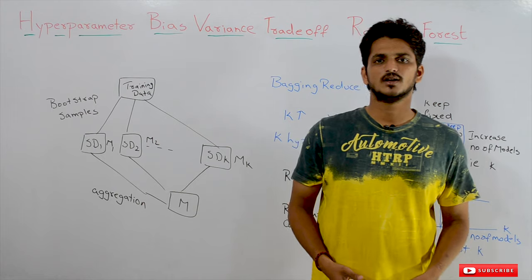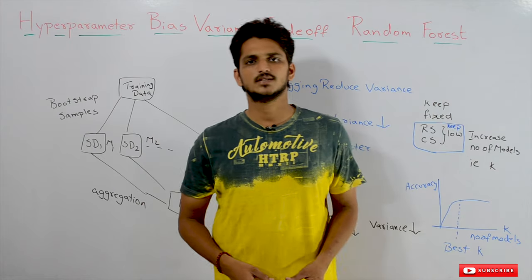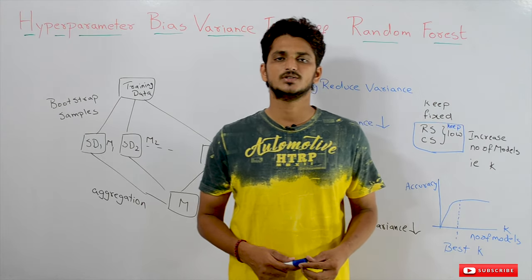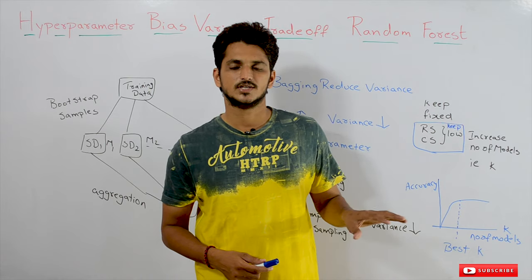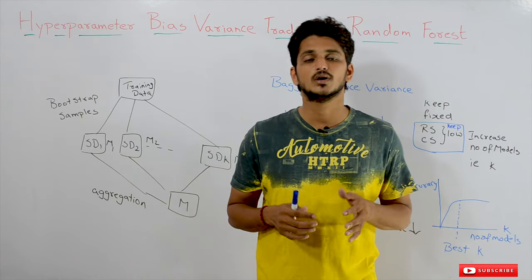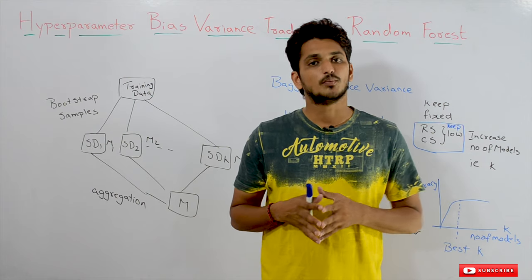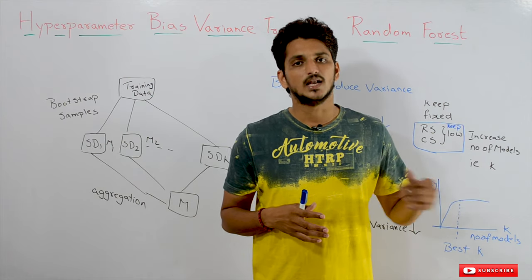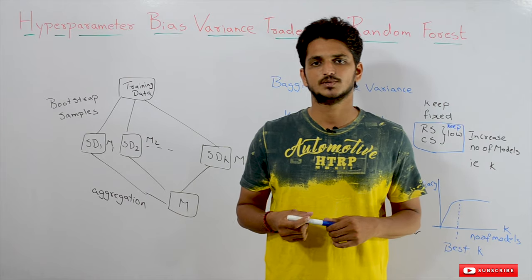Hi, welcome to Learning Monkey. I am Raghuveer. In this class we will discuss about hyperparameter bias-variance trade-off in a random forest. In our previous classes we clearly discussed how to construct the random forest, so please watch our previous class and come back here. The link for the playlist is provided in the description below.